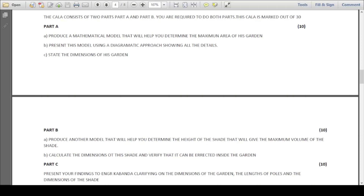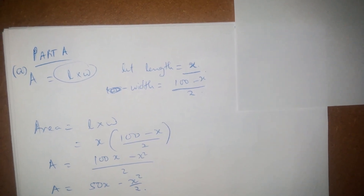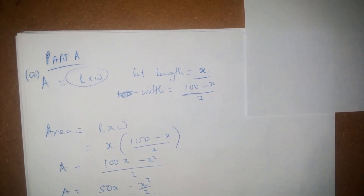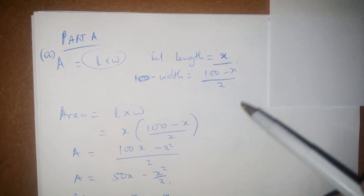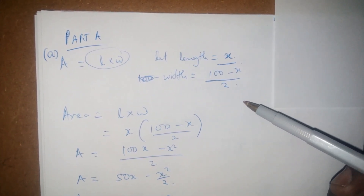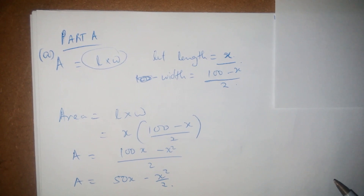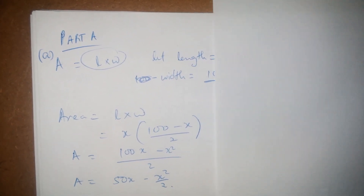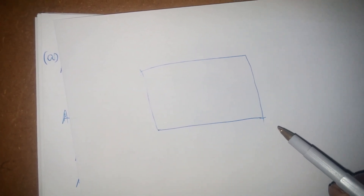For the first part, we produce a mathematical model to help determine the maximum area of his garden. We know that area equals length times width. So if we let our length equal to x, we must also write our width in terms of x so that we'll be able to do our differentiation. If our length is called x, what is our width equal to?